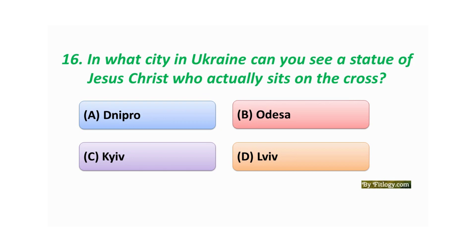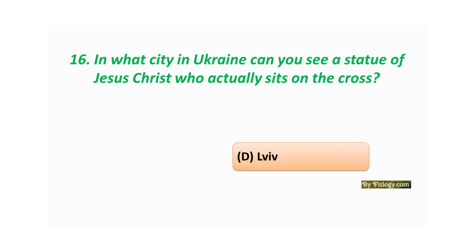Question number sixteen: In what city in Ukraine can you see a statue of Jesus Christ who actually sits on the cross? Option A: Dnipro. Option B: Odesa. Option C: Kyiv. Option D: Lviv. The correct answer is Option D: Lviv.